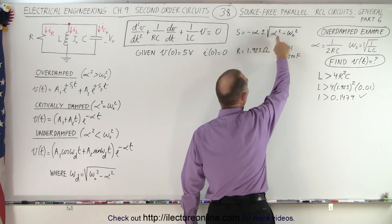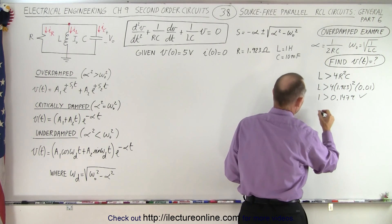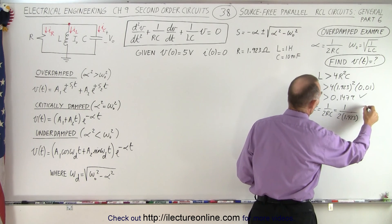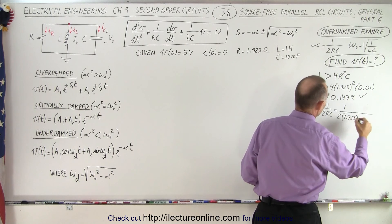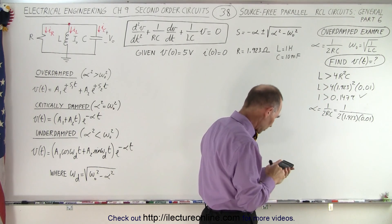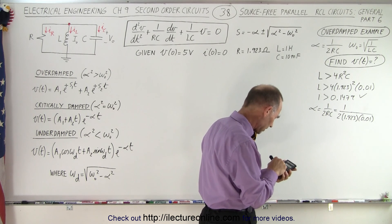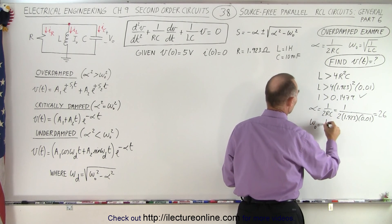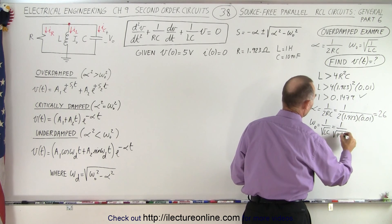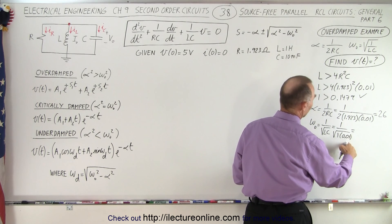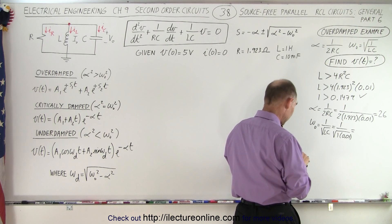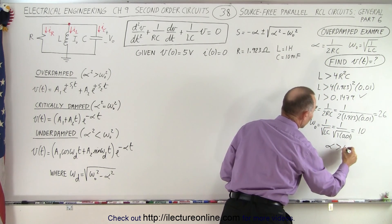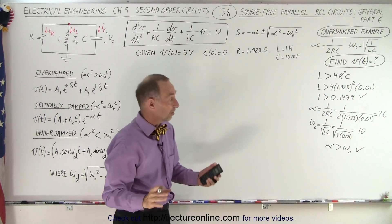We can also verify by realizing that alpha is greater than omega-sub-naught, so let's calculate both. Alpha equals 1 over 2RC, which is 1 over 2 times 1.923 times 0.01. Taking the inverse of that gives us alpha equal to 26. Then omega-sub-naught equals 1 over the square root of L times C, which is 1 over the square root of 1 times 0.01. The square root of 0.01 is 0.1, and the inverse is 10. Since alpha (26) is greater than omega-sub-naught (10), we have an overdamped case.